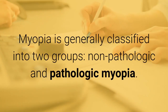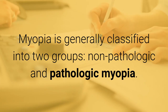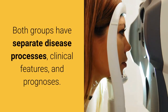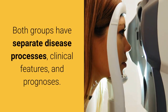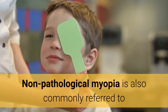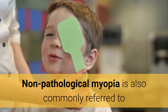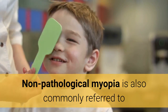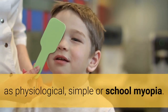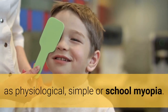Myopia is generally classified into two groups: non-pathologic and pathologic myopia. Both groups have separate disease processes, clinical features, and prognoses. Non-pathological myopia is also commonly referred to as physiological, simple, or school myopia.